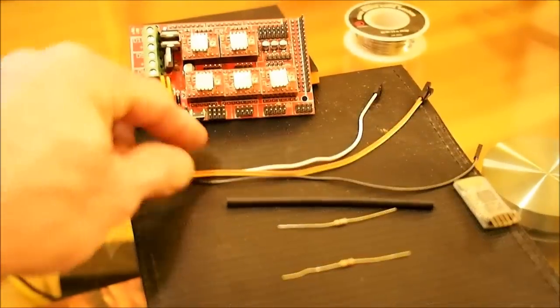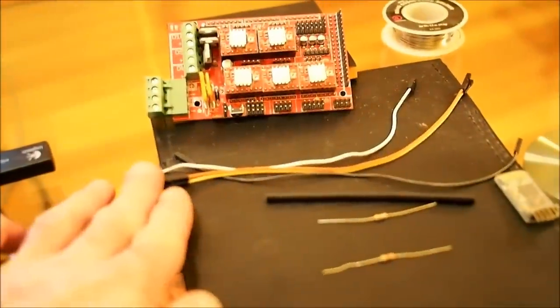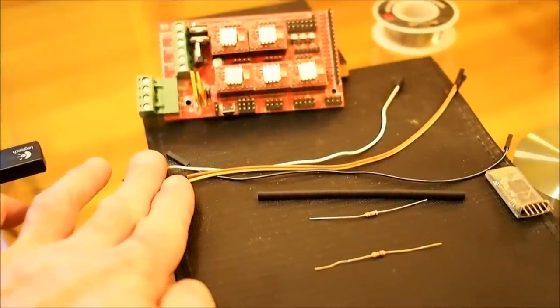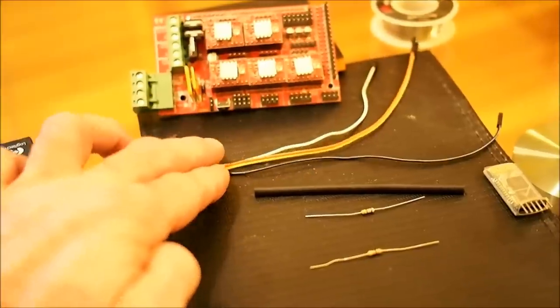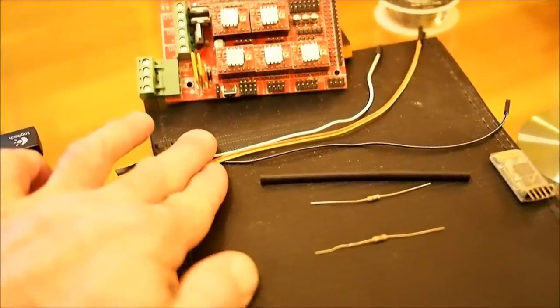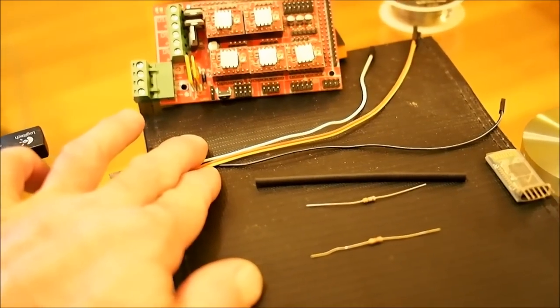We've got four wires, female-to-female pin connectors. You should be familiar with those if you've done any Arduino stuff at all. You need one for ground, one for power, one for transmit, and one for receive.